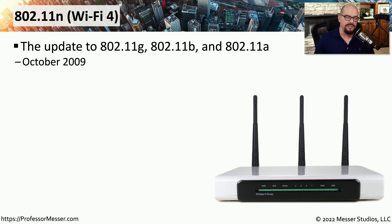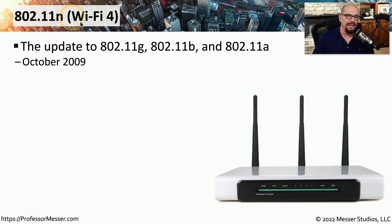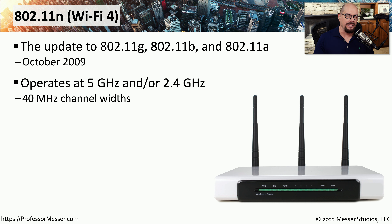In 2009, a new standard was released that effectively upgraded 802.11a, B, and G to the new 802.11n. Instead of using standard names like 802.11a or 802.11g, we now refer to these as Wi-Fi standards — so 802.11n can also be called Wi-Fi 4. Technically, 802.11a, B, and G could be called Wi-Fi 1, 2, or 3, but because those standards are so old, we start the numbering scheme at Wi-Fi 4. Because 802.11n is designed to upgrade all three previous standards, it is able to operate at both 5 gigahertz and 2.4 gigahertz simultaneously if your access point supports that.